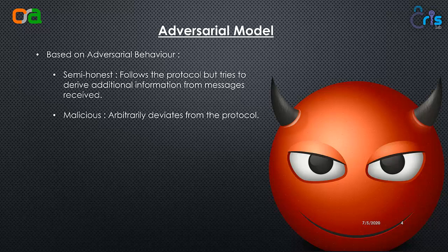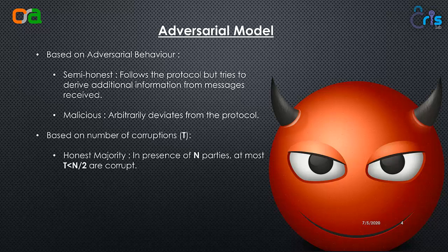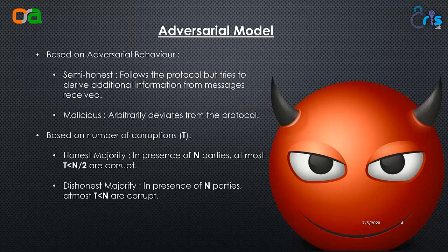Next is the malicious adversary, where the adversary can deviate arbitrarily from the protocol — he can either follow the protocol steps if he wishes, or completely do something else. The next distinction is based on the number of corruptions. The first type is honest majority: if n parties are taking part in an MPC, we allow at most n/2 minus 1 to be corrupt, so honest parties are in majority. The next is the dishonest majority setting, where among n parties we allow n minus 1 to be corrupt. In our work, we look at the malicious setting and the honest majority setting.